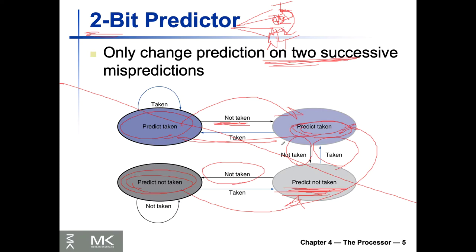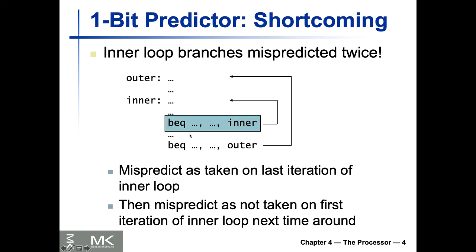The minimum mispredictions of the branches would be two — you entered a loop and you shouldn't have, and then you exited a loop and you shouldn't have again. It's working only for branches — branch prediction — whether it's BEQ or other types of branches.